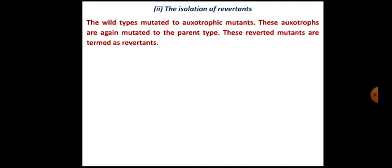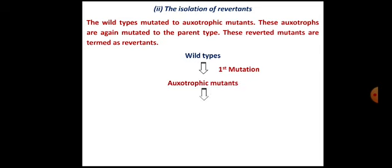Now what is the difference between revertent mutants and the earlier wild type organisms? The difference is that these revertents are possible overproducers of microbial metabolites. So wild type population is exposed to mutagenic agent to generate auxotrophic mutants, and the auxotrophic mutants' population is exposed again to mutagenic agent and reverts back to the parental or prototropic type.